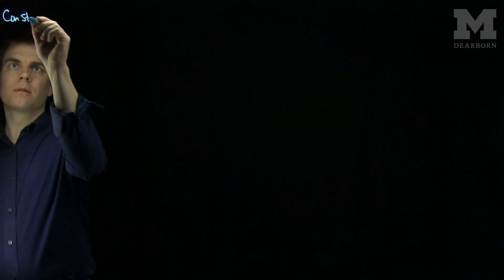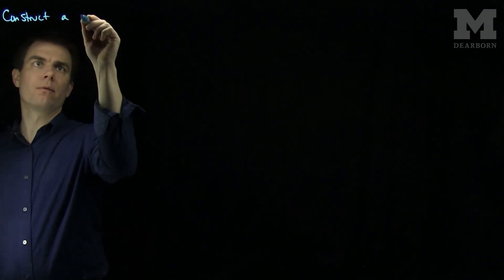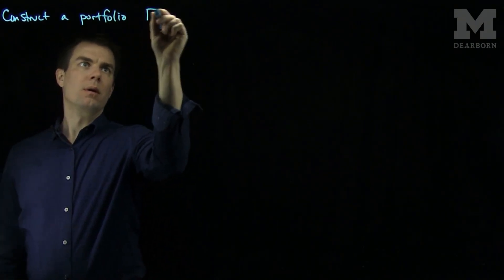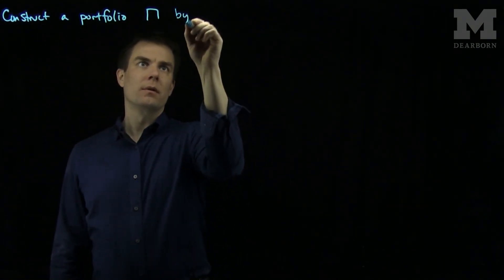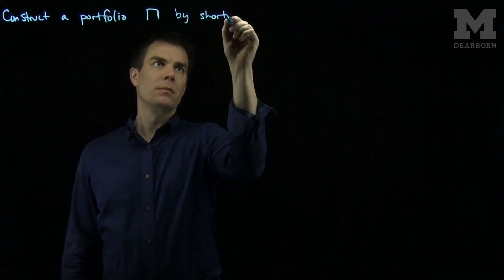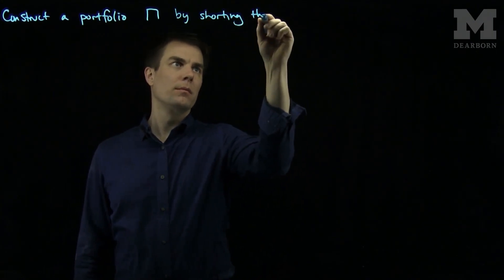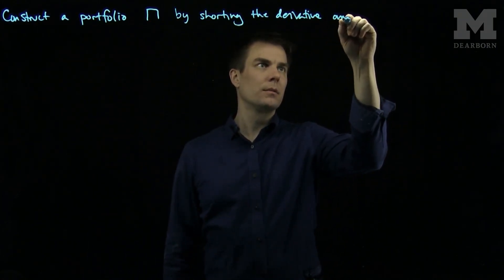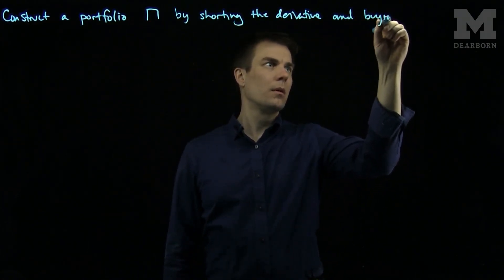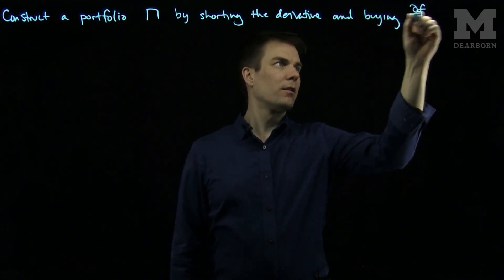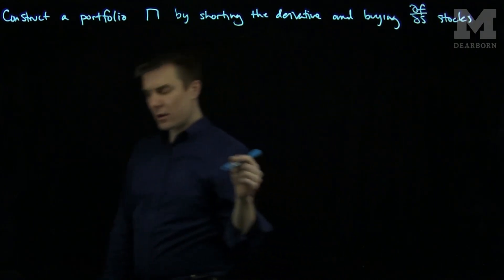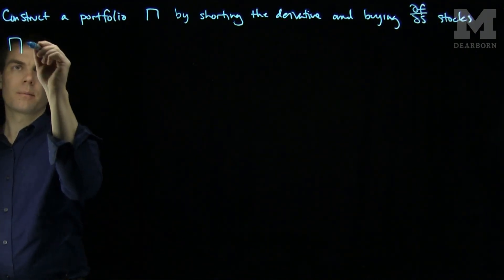Recall, if we construct a portfolio Π by shorting one derivative and purchasing ∂f/∂s stocks, then our portfolio consists of π